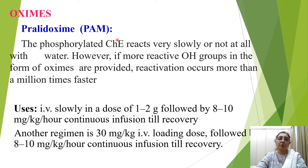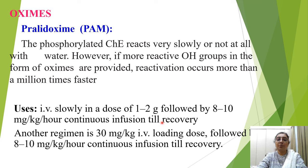Cholinesterase reactivator pralidoxime (oxime/2-PAM) is used alongside atropine as specific treatment. The phosphorylated enzyme reacts very slowly with water, but the reactive oxime group of pralidoxime reactivates it over a million times faster. Dosing: 1 to 2 g IV followed by 8 to 10 mg/kg/hour continuous infusion until recovery; an alternative regimen is 30 mg/kg IV loading dose followed by 8 to 10 mg/kg/hour continuous infusion until recovery.